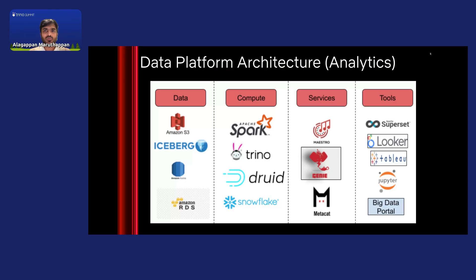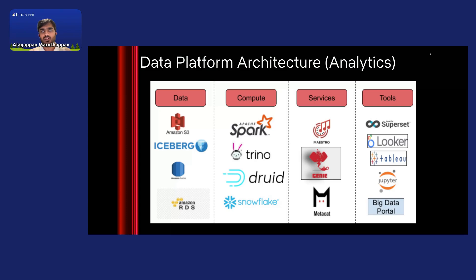Genie is another open-source project from Netflix. It's a federated big data execution engine. Genie abstracts away a lot of the details from the end-user, like the cluster details, data dependencies, and library versions. It provides REST APIs for users to submit and monitor their jobs without having to install any clients or know details about the cluster or commands themselves.